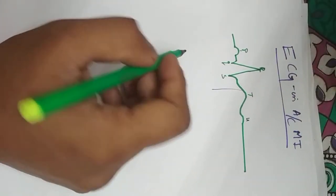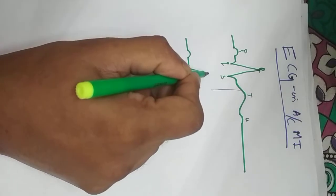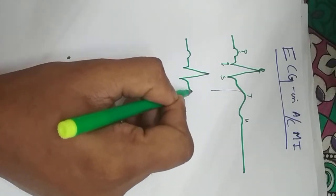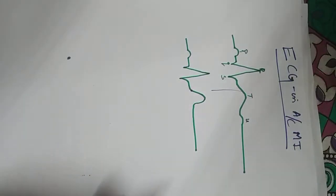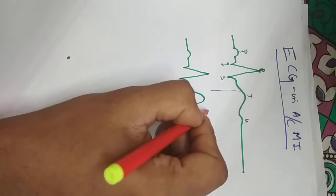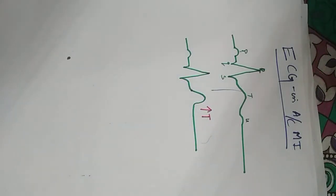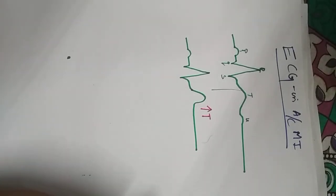The first change in acute myocardial infarction is an increase in amplitude of the T wave — also called the peaking T wave. This is the first change, and it takes place within minutes after myocardial infarction.